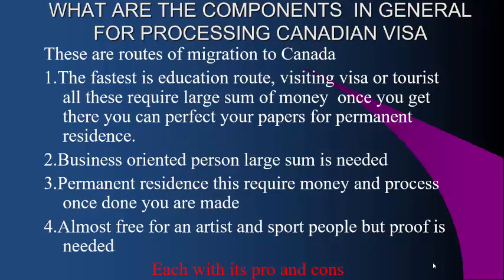These are the routes you can take in getting to Canada or getting Canadian permanent residency. First, the fastest is the education route — it is the fastest but not the cheapest. Then there is visiting visa or tourist visa. All these require a large sum of money. If you are able to gain admission to any Canadian university, college, or trade college, in less than six months you can be in Canada. You can also arrange a visit to a family member, friend, or religious organization.